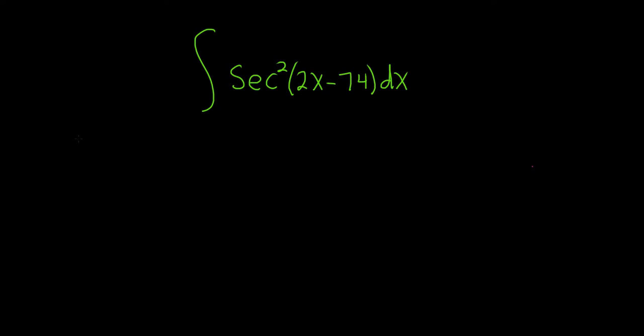Integrate the secant squared of 2x minus 74. So this is actually really simple in the sense that if you have secant squared x dx by itself, you ask yourself, hey, what's a function whose derivative is secant squared? So tangent. So you just get tangent x plus c.